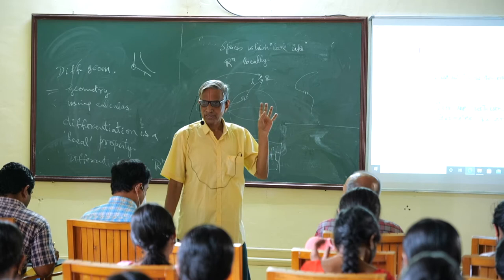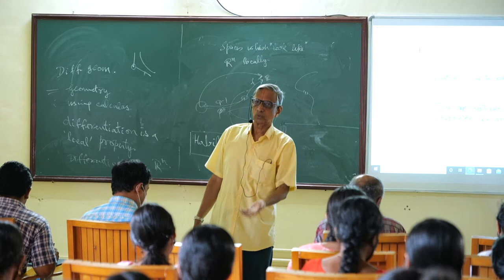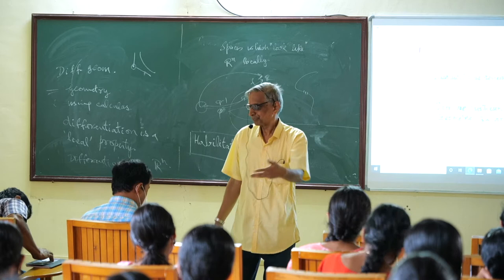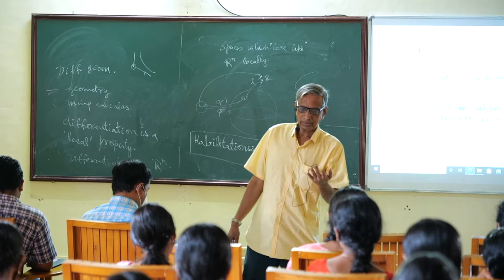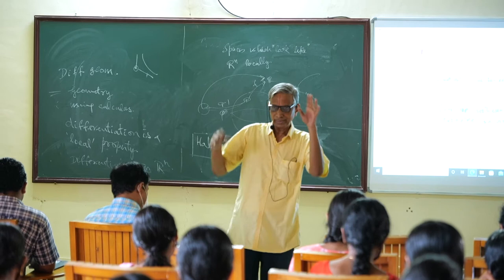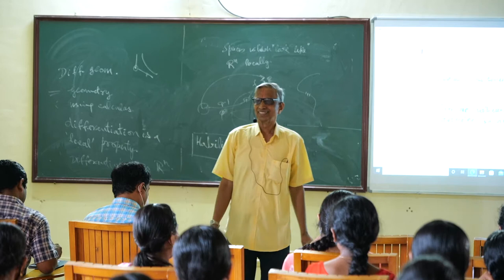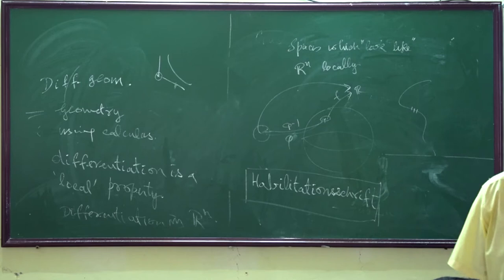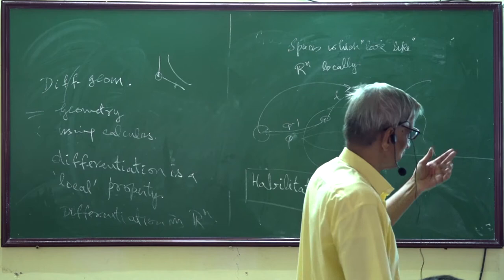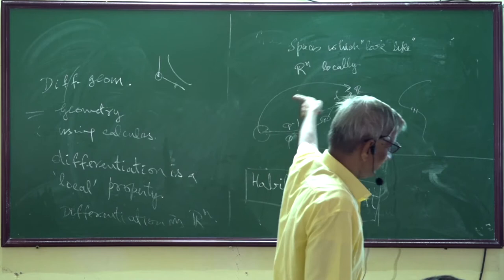Riemann's thesis was on complex function theory — that's where the Cauchy-Riemann equations, Riemann surfaces and all those things come from. The three most important people in basic complex function theory are Cauchy, Riemann, and Weierstrass. Cauchy always used integrals, Weierstrass always used power series, and Riemann used geometry. He introduced Riemann surfaces in that context, which in a way also started modern geometry.